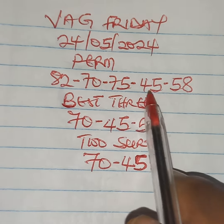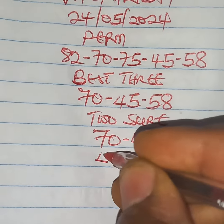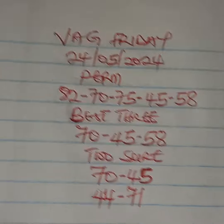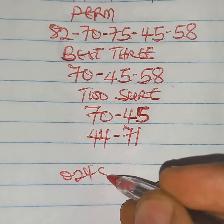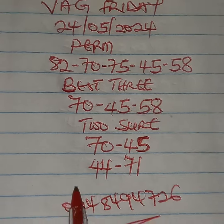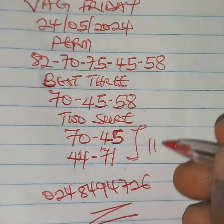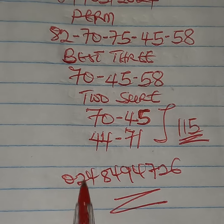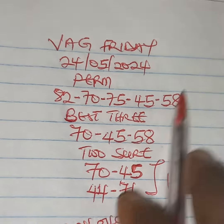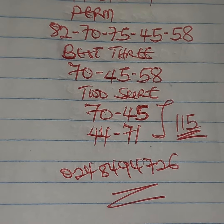So Back Friday, 24th May 2024, event 82 — 70, 75, 45. Then 70, 45, 58. And don't forget to use the date plan also — same addition 44, 71 as well. Too sure. You can reach me on 0248494726 and I will state the numbers for you. Too sure from date plan confirming 70, 45 — same addition 115. If you have the strength, you can add 44 and 71 to make a long permutation of seven numbers, 21 lines. Good luck to us all, bye bye.